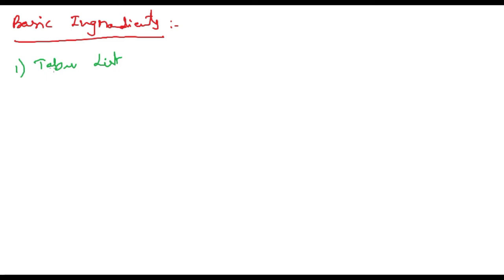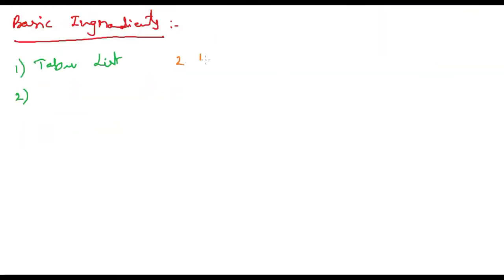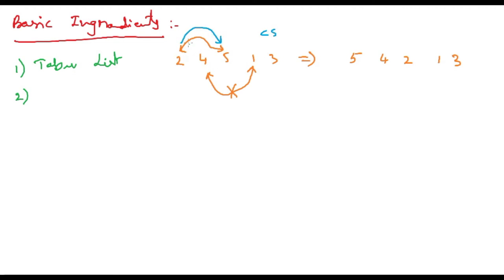After that, a neighborhood is constructed to identify adjacent solutions that can be reached from the current solution. For example, in the previous example the solution is 2-4-5-1-3. This move is forbidden, so you should not move in this way. Now for example, if we interchange two and five, the current solution changes to 2-5-4-1-3. So once we move using an item not in the taboo list, the current solution gets changed.